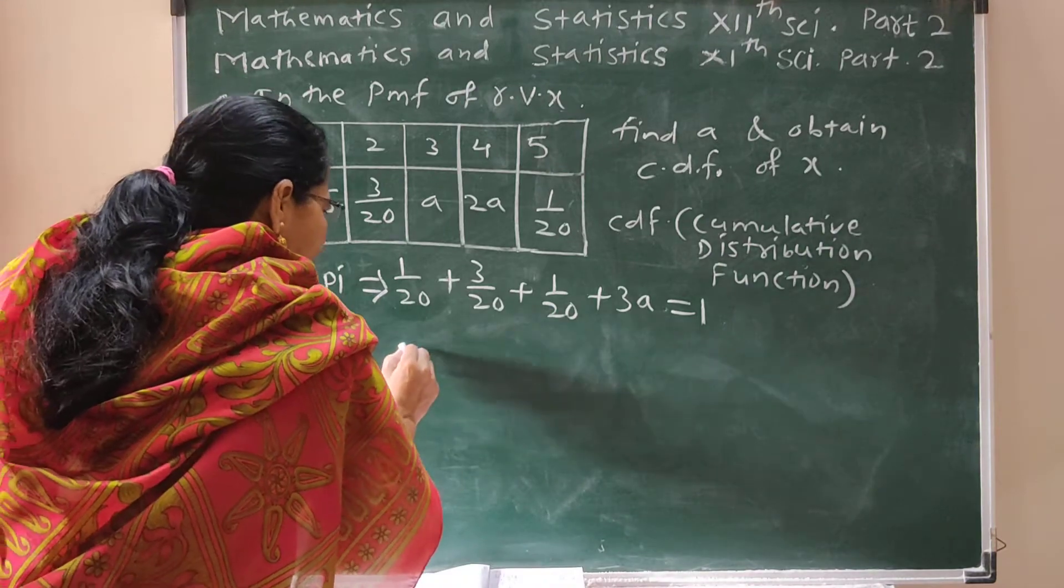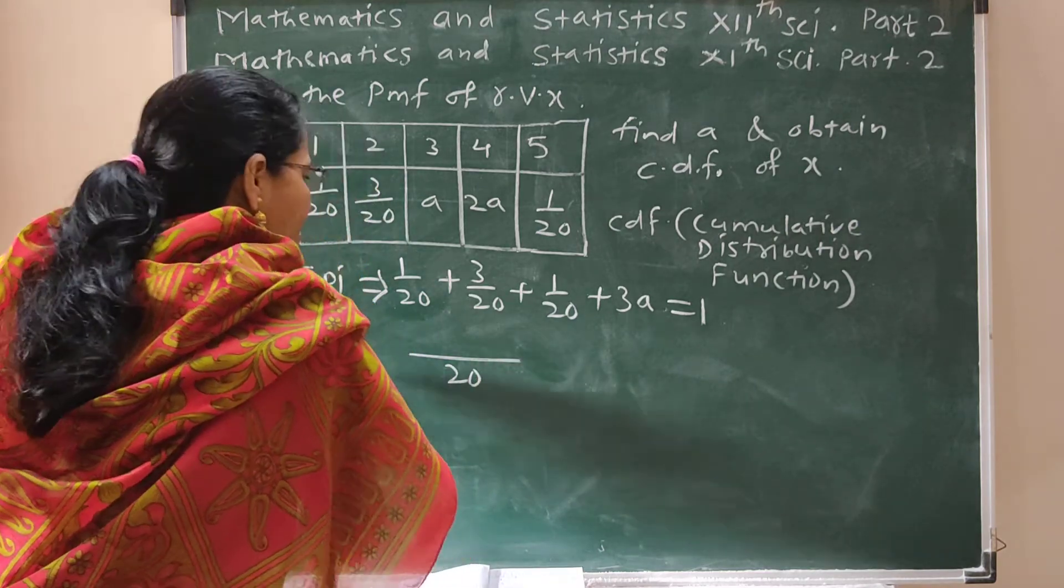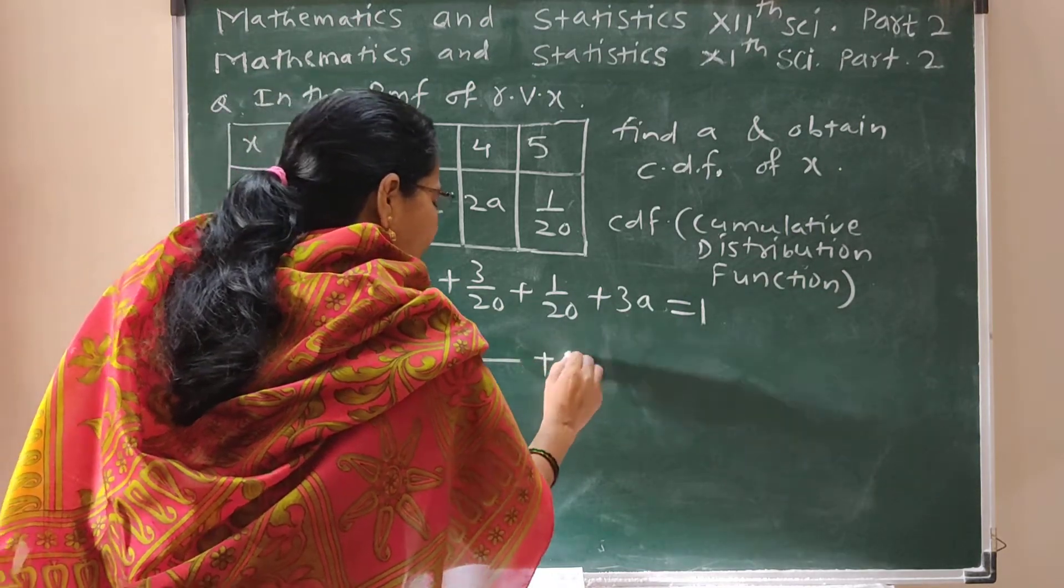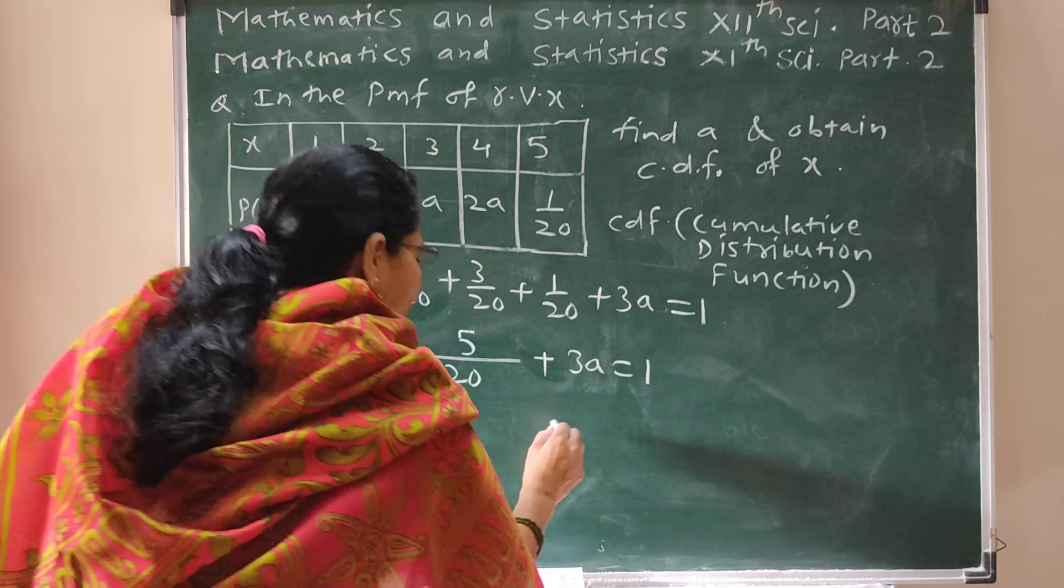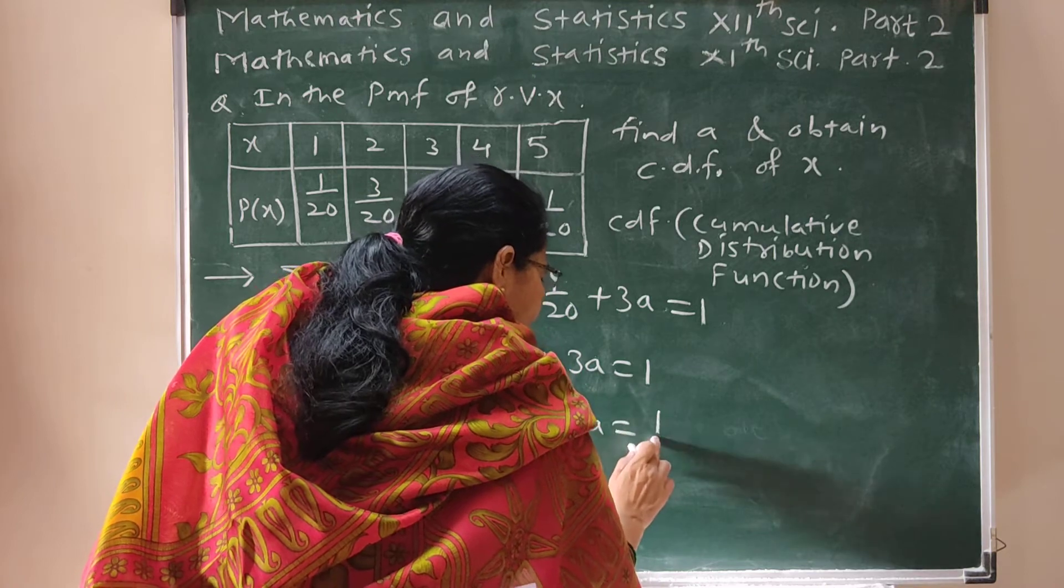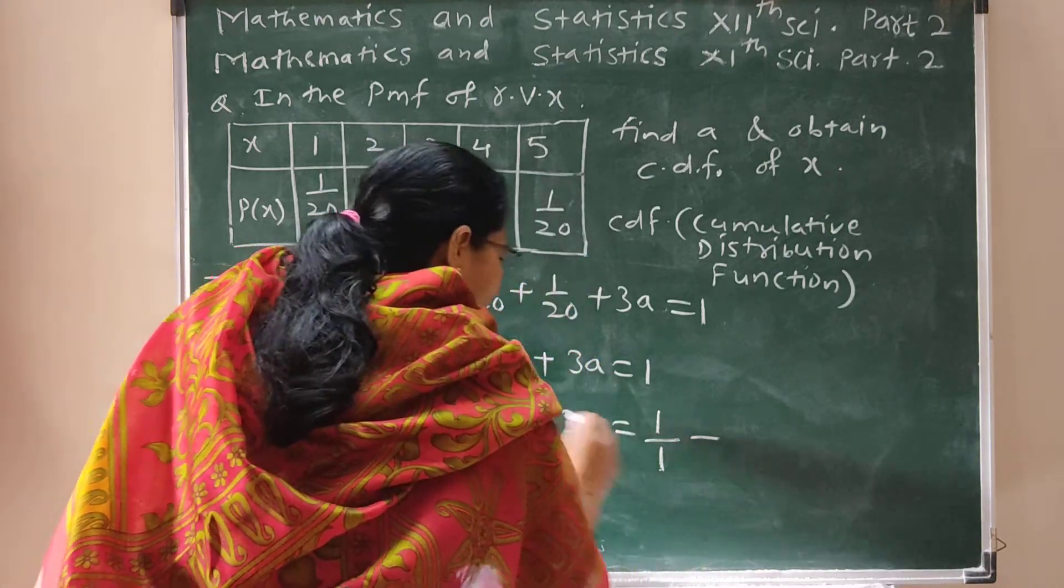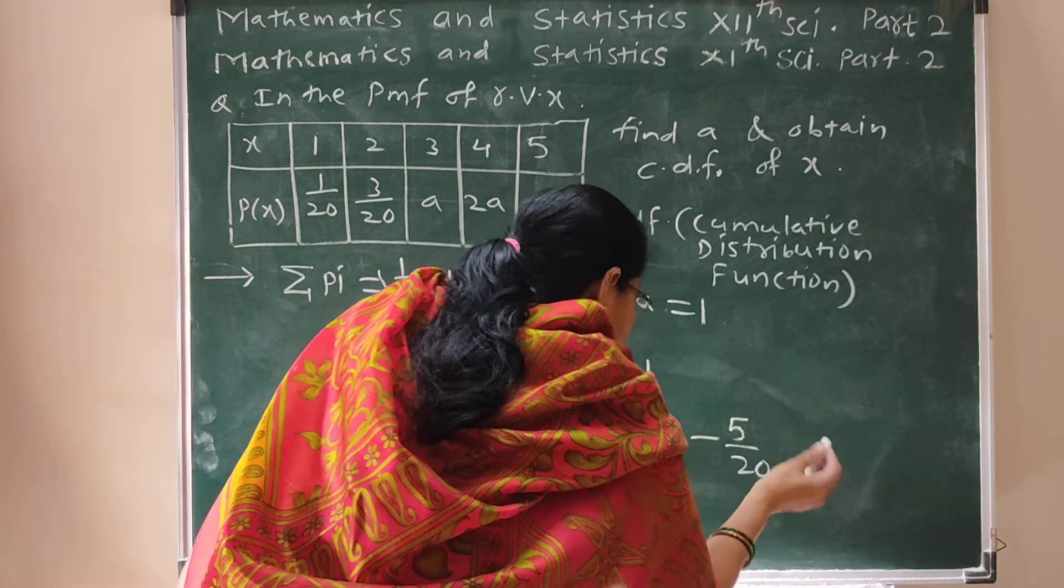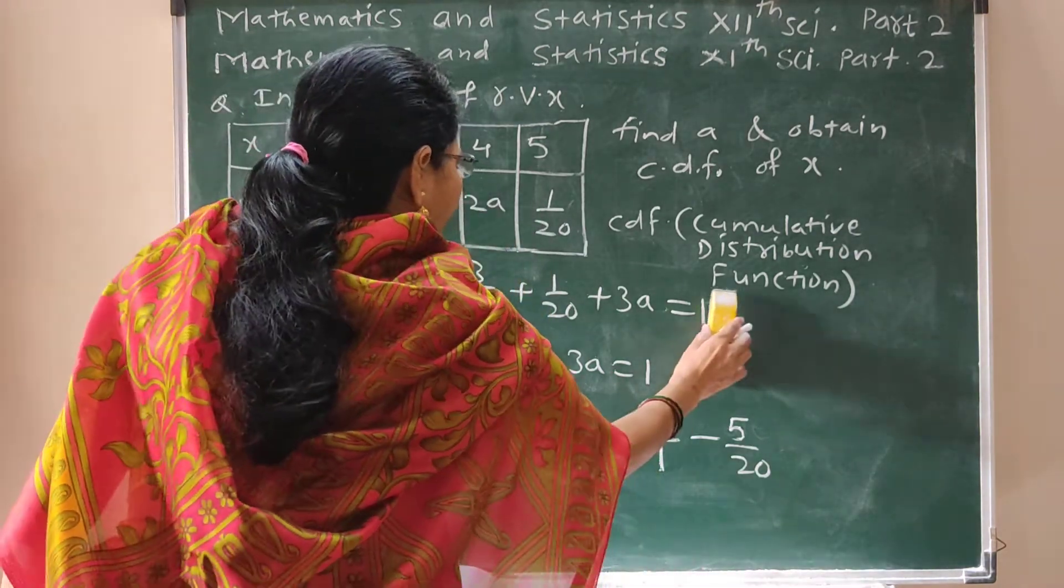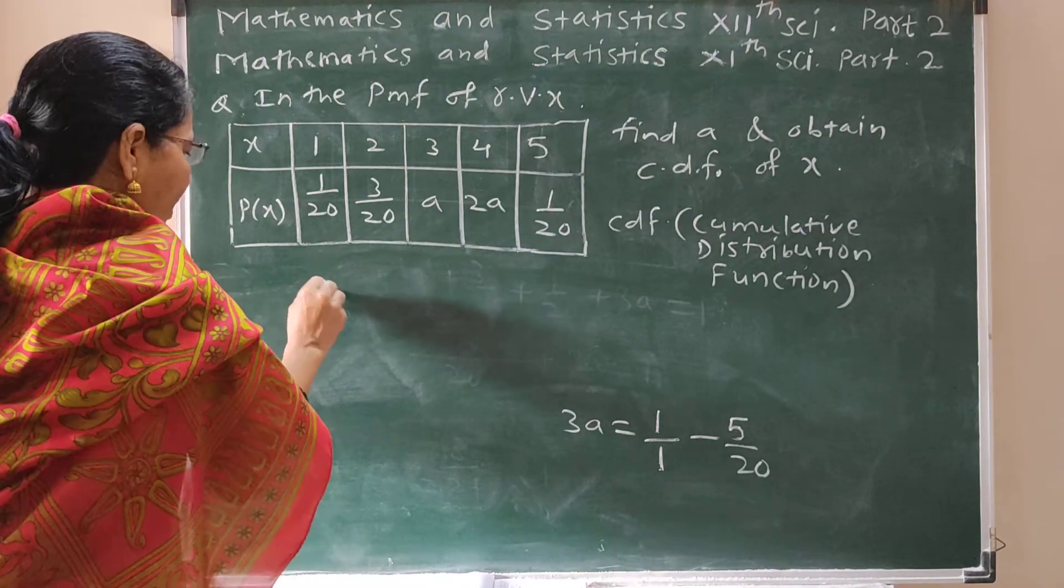Sum of all probabilities: denominator 20 common. 1 upon 20 plus 3 upon 20 plus A plus 2A plus 1 upon 20. So sum is 1 plus 3 plus 1 is 5, plus 3A equals 1.